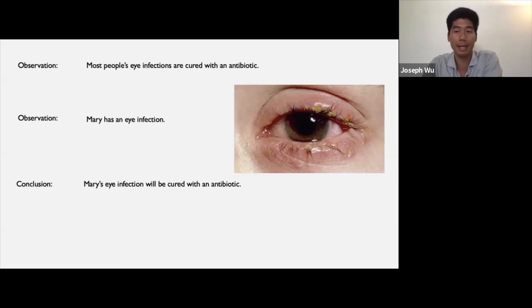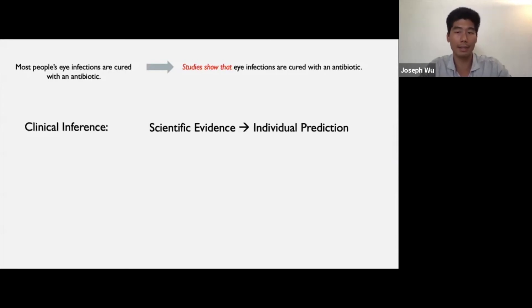Again, stepping back a little bit, this is an inductive inference in which we moved from a population level claim, namely most people's treatment for eye infections, to draw a conclusion about an individual, namely Mary's eye infection treatment. It's worth expanding on this point. In practice, a claim such as most people's eye infections are cured with an antibiotic actually means something like this: Studies show that eye infections are cured with an antibiotic. A physician might make a clinical inference which moves from the scientific evidence to an individual prediction about her patient.